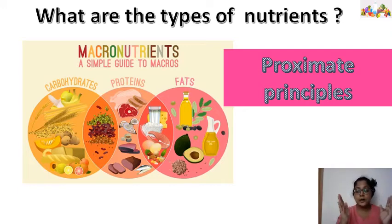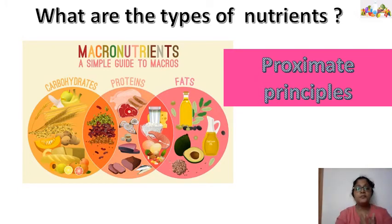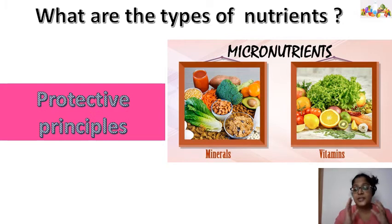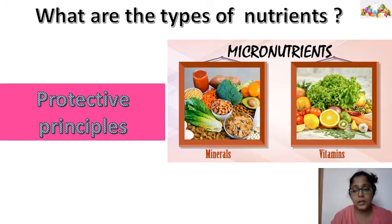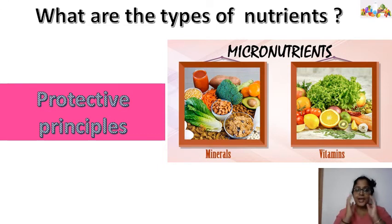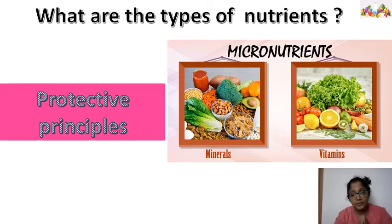Why are these called macro? Macro means bigger — we require them in a greater amount and they perform important functions in our body. Micronutrients are also similarly necessary for our body. They are the protective principles, protecting the proximate principles and doing the finer work of the body. For example, if we need energy, carbohydrate, protein, and fat help us get that energy, while minerals and vitamins help in the metabolism of carbohydrate, protein, and fat. So macronutrients are also known as proximate principles of food — examples: carbohydrate, protein, and fat. Micronutrients are known as protective principles of food — examples: vitamins and minerals.